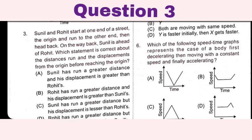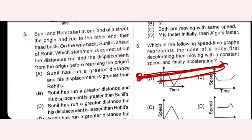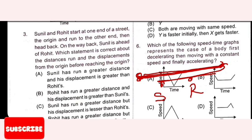Sunil and Rohit start from the same point and run to the other end, then return. On the way back, Sunil is ahead of Rohit. Which statement is correct about the distances run and the displacements from the origin before reaching the origin? We have to identify the correct statement about distance covered and displacement in both cases.